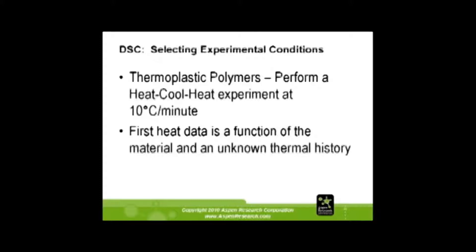After you cool it, you are cooling it at a constant rate, so you can have a known history for your cooling curve, and your second heat will be a functional material with a known thermal history. You'll get two different numbers for the first and second heat. The first heat should be your original material number, and the second is what you've done to the material.